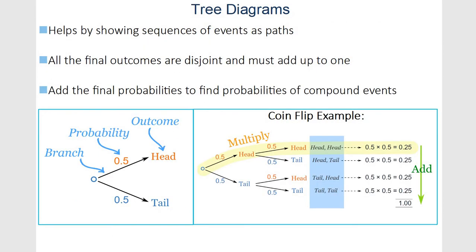Another useful picture is a tree diagram. These are super helpful — they show a sequence of events. You start with your original starting point and then it branches off. You've got your probabilities listed on the arrows and the outcome is always at the end. Here we've got a coin flip example: the first coin we flip is either heads or tails, then the second coin is either heads or tails. This 0.5 probability is just for the second flip. To get the probability of one after another, the probability of getting a head and then another head is just 0.5 times 0.5. That's another way of going about it — just multiplying the branches out.